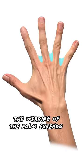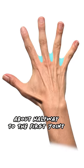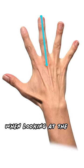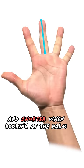The webbing of the palm extends beyond the knuckles, about halfway to the first joint. This makes fingers appear longer when looking at the back of the hand and shorter when looking at the palm.